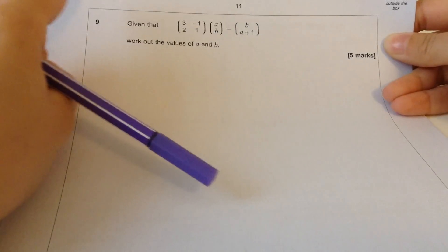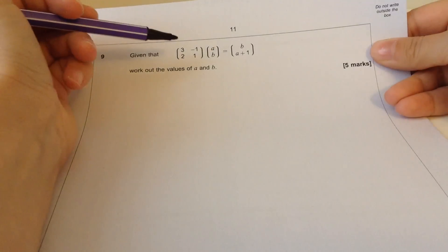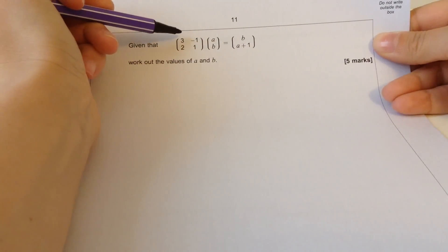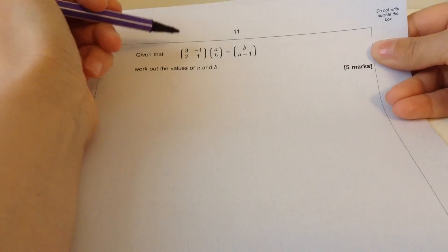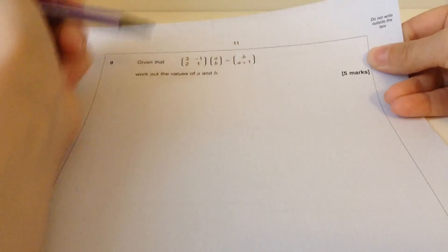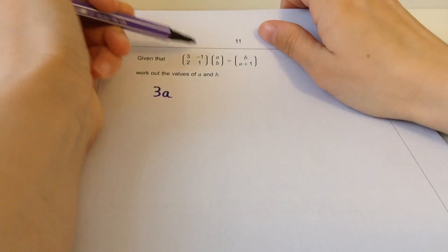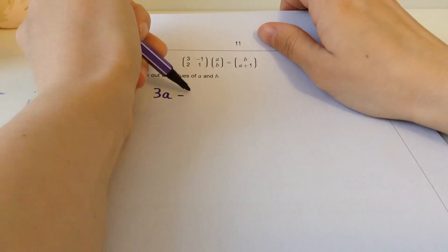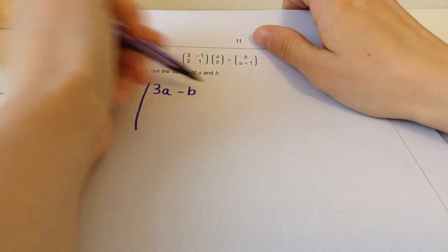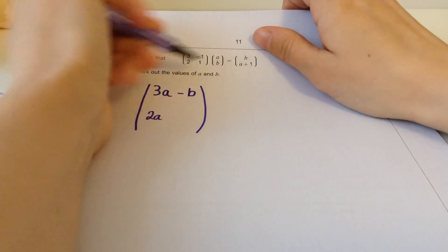Okay, so we're going to do some matrix multiplication. When you multiply a matrix by a vector like this, you need to do the first row, first column. It's easier if I just do it. So 3 times a is 3a, minus 1 times b is minus 1b. Then 2 times a is 2a, and 1 times b is 1b.